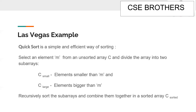A randomized quicksort algorithm is an example of a Las Vegas algorithm. Quicksort is a simple and efficient sorting algorithm — one of the best. In the quicksort algorithm, we select a pivot element and place all smaller elements on the left side of the pivot and all larger elements on the right side.